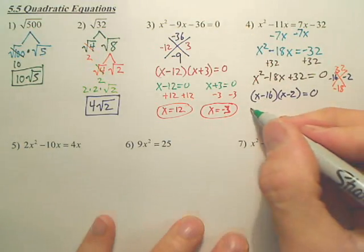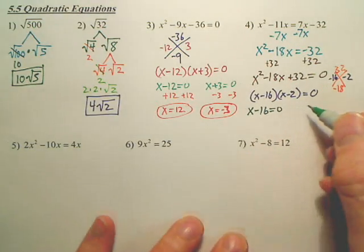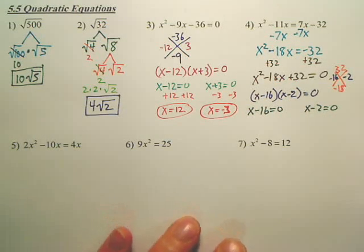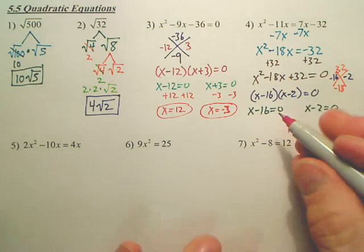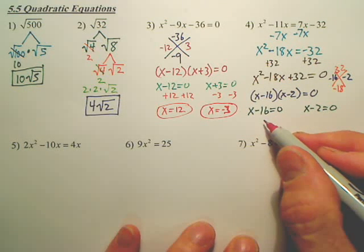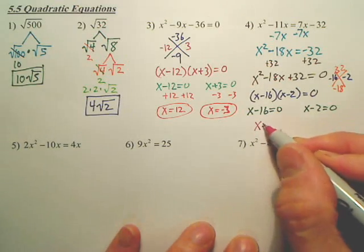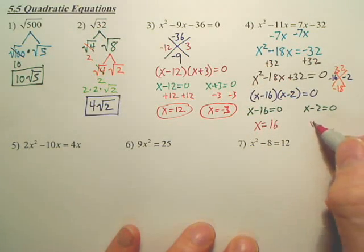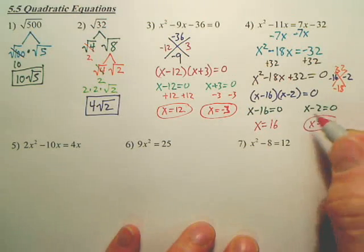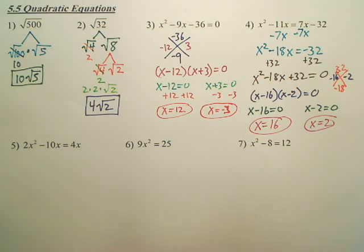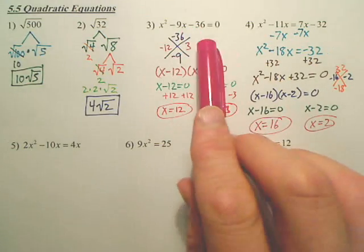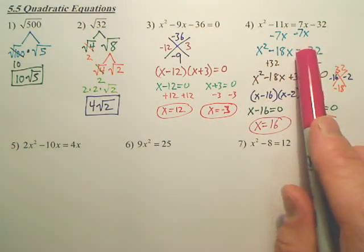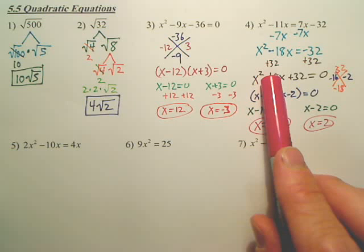You have x minus 16 equals 0, and you have x minus 2 equals 0. Both of those, one of those has to equal 0. Now, can most of you just tell me the answer by looking at that? Most of you should be able to look at that and go, oh, that's 16. And look at this one and go, oh, that's 2. That should work. 16, 2. Both those will make this true. So, here it was equal to 0. Here we had to set it equal to 0. Got it?